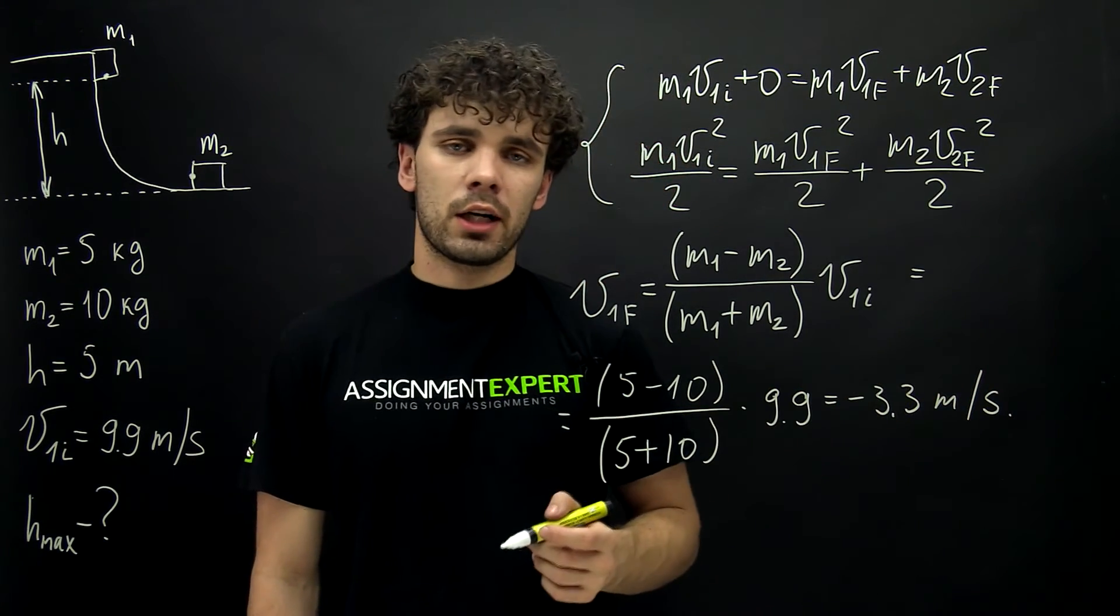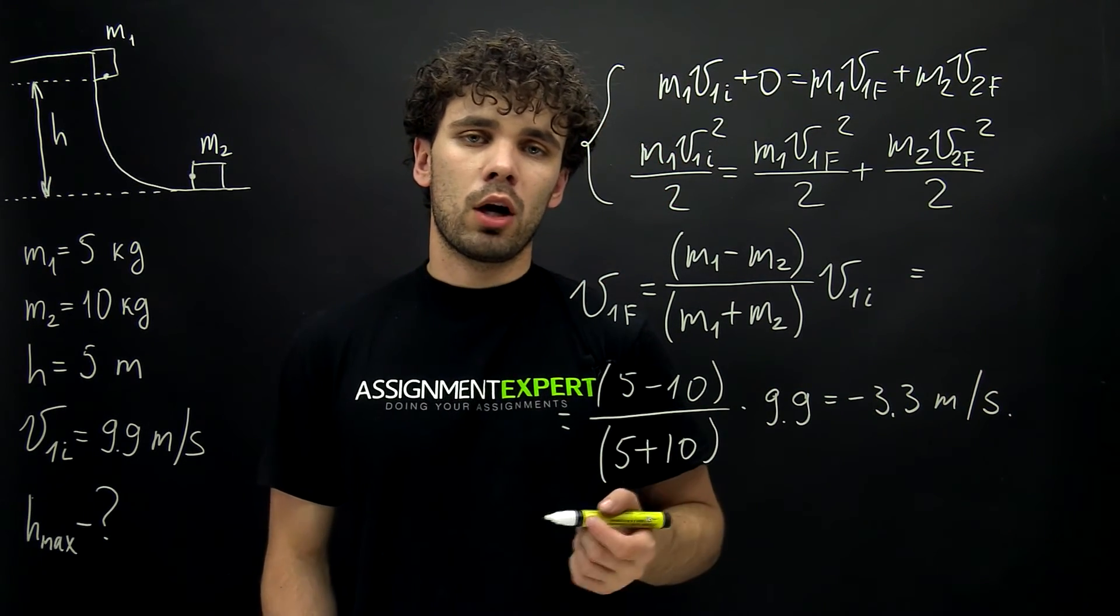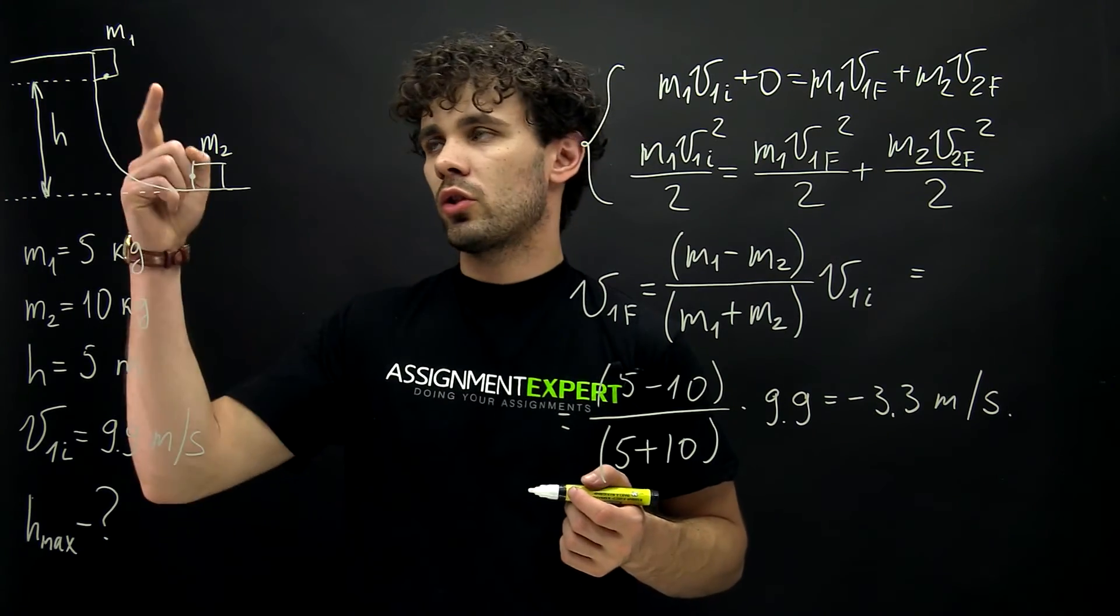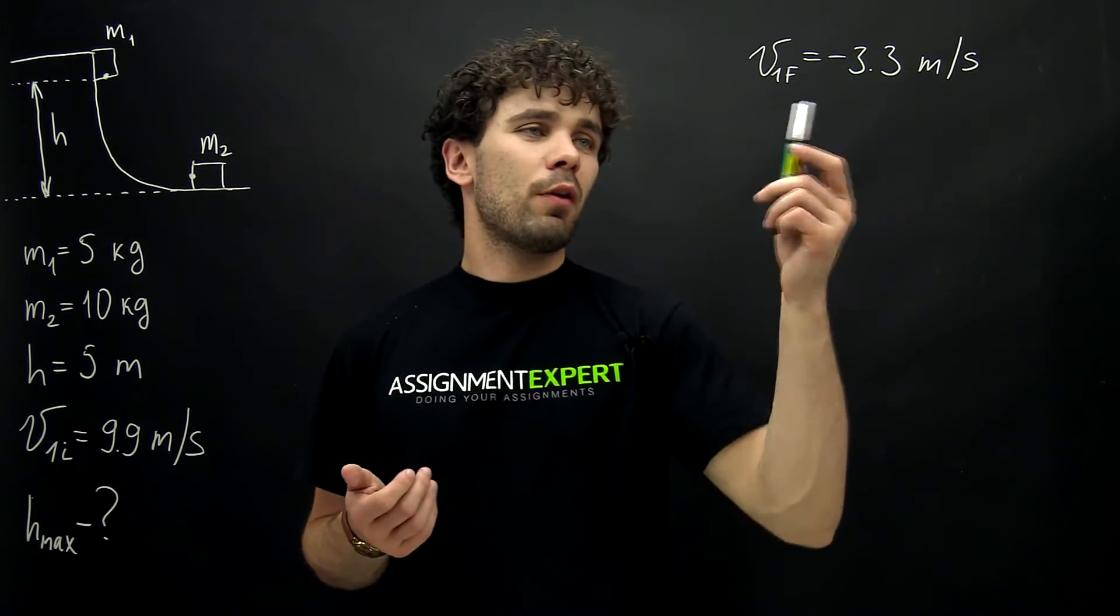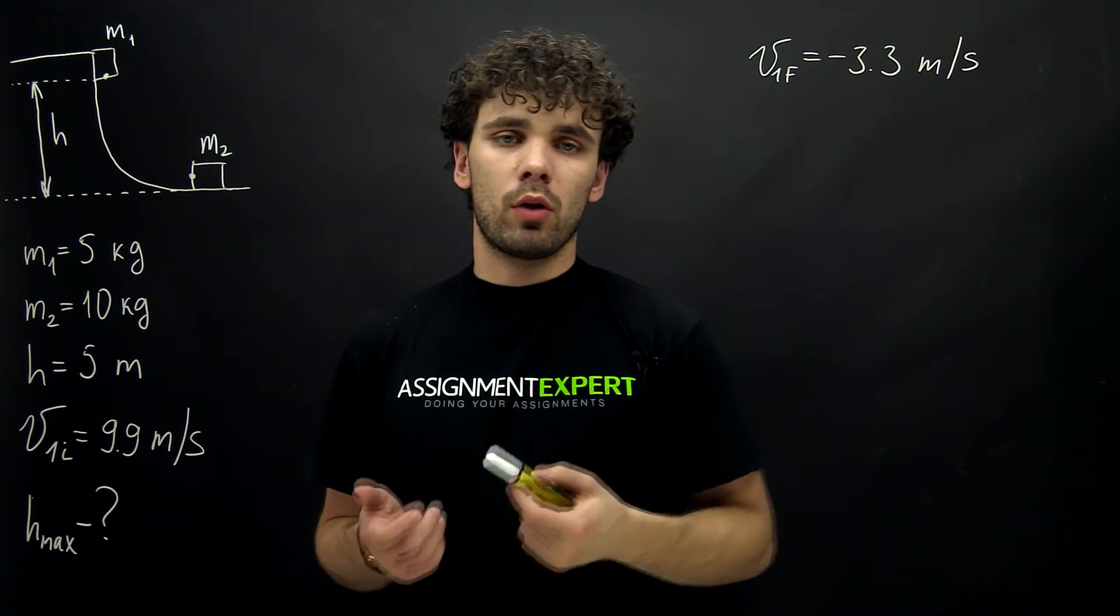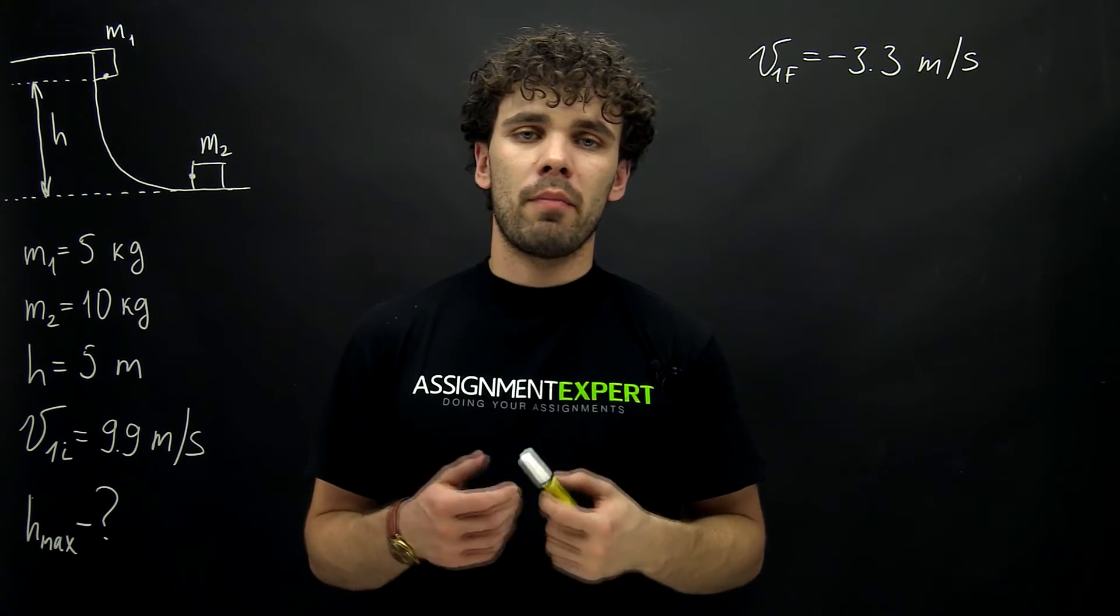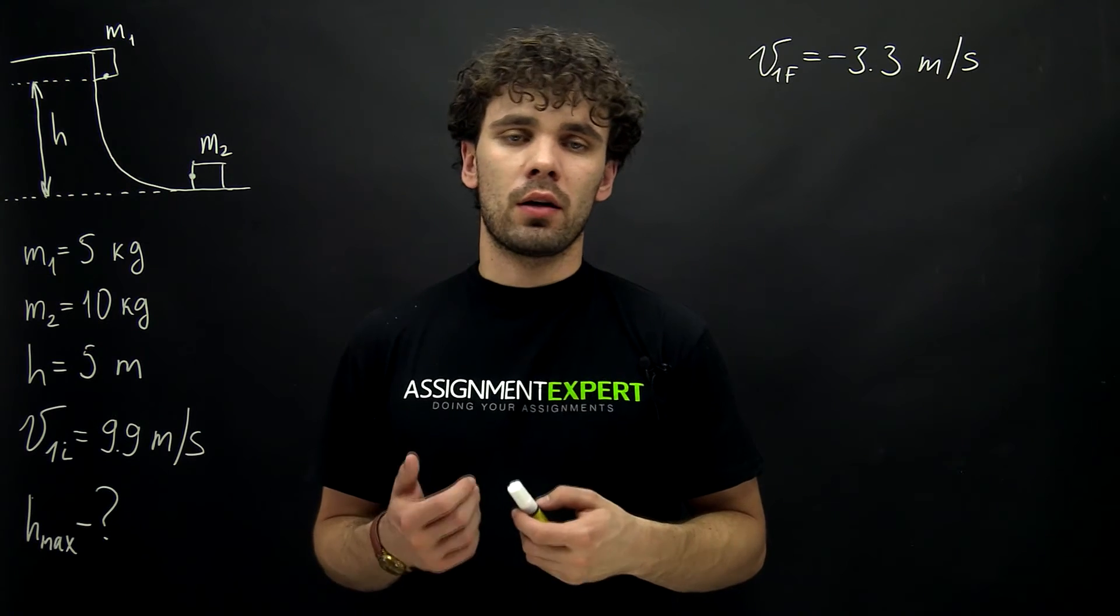And here the negative sign means that the direction of the block after the collision is opposite to the initial direction. Okay, so we found the final speed of the first block and finally we can find the maximum height at which it can rise after the collision.